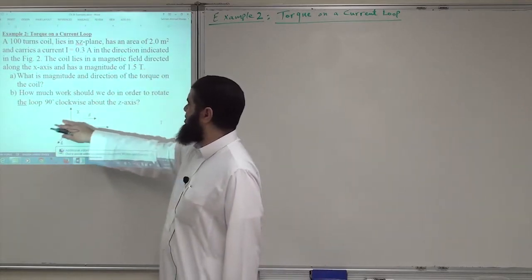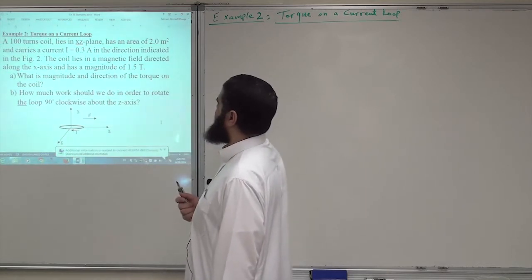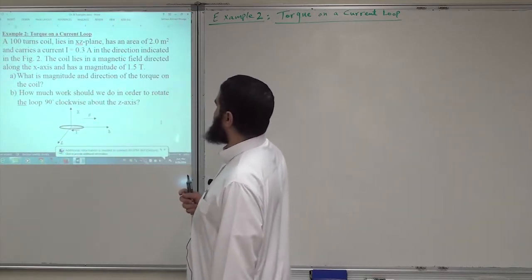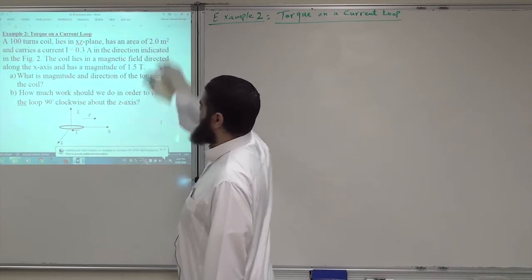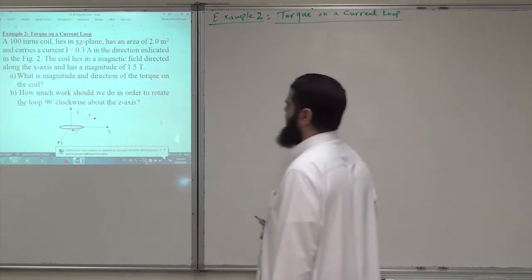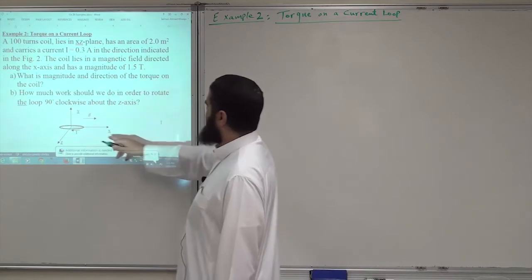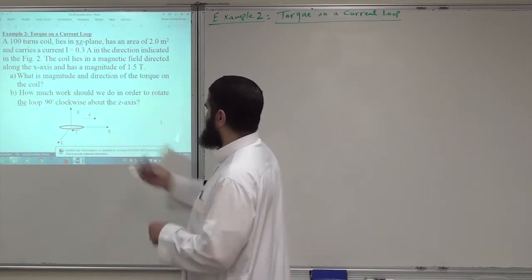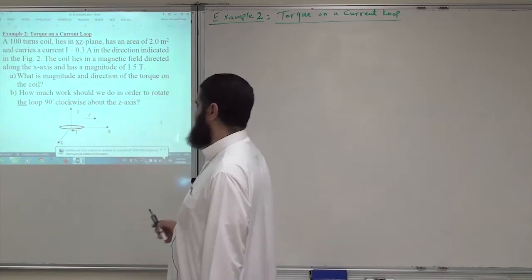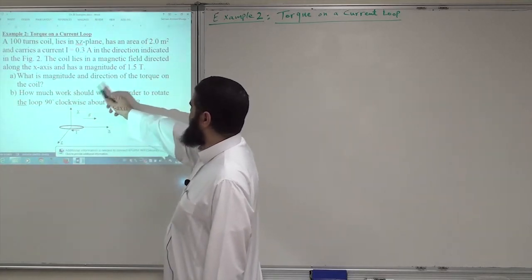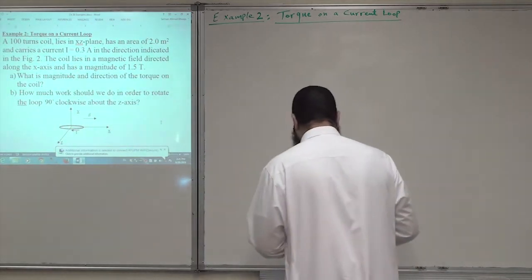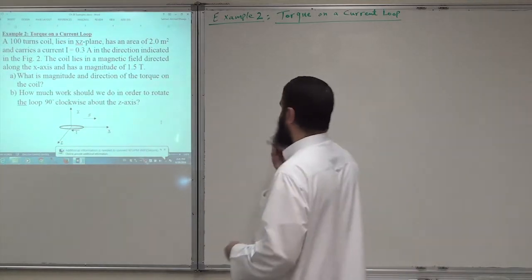We have a coil consisting of 100 turns, circular, lying in the x-z plane. It has an area of 2 meter squared and carries a current I = 0.3 amps in the direction indicated in the figure. The coil lies in a magnetic field directed along the positive x-axis with a magnitude of 1.5 Tesla. We want the magnitude and direction of the torque on the coil.